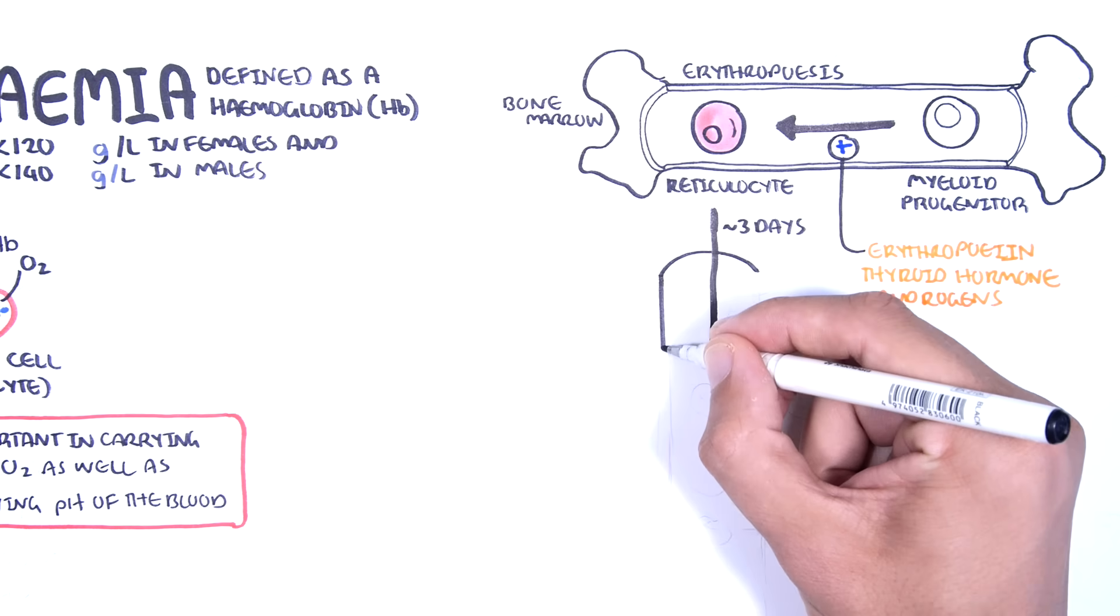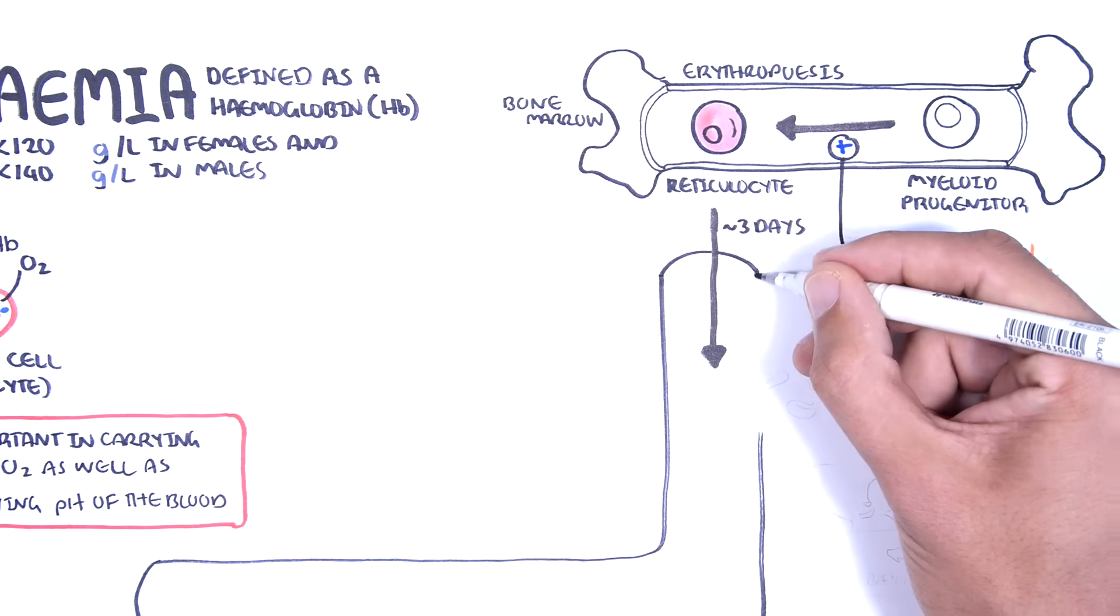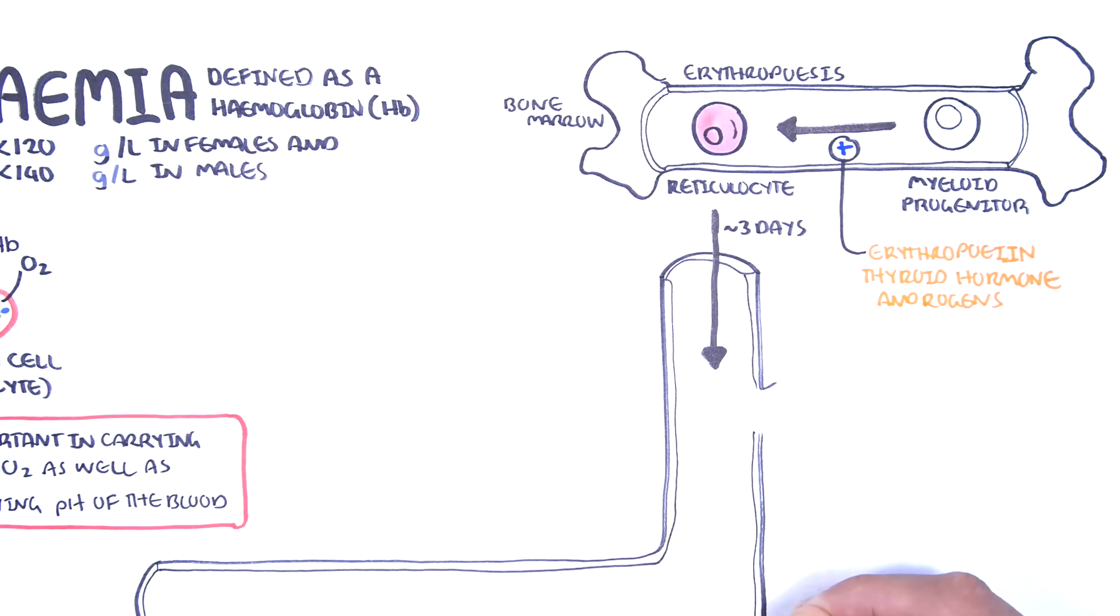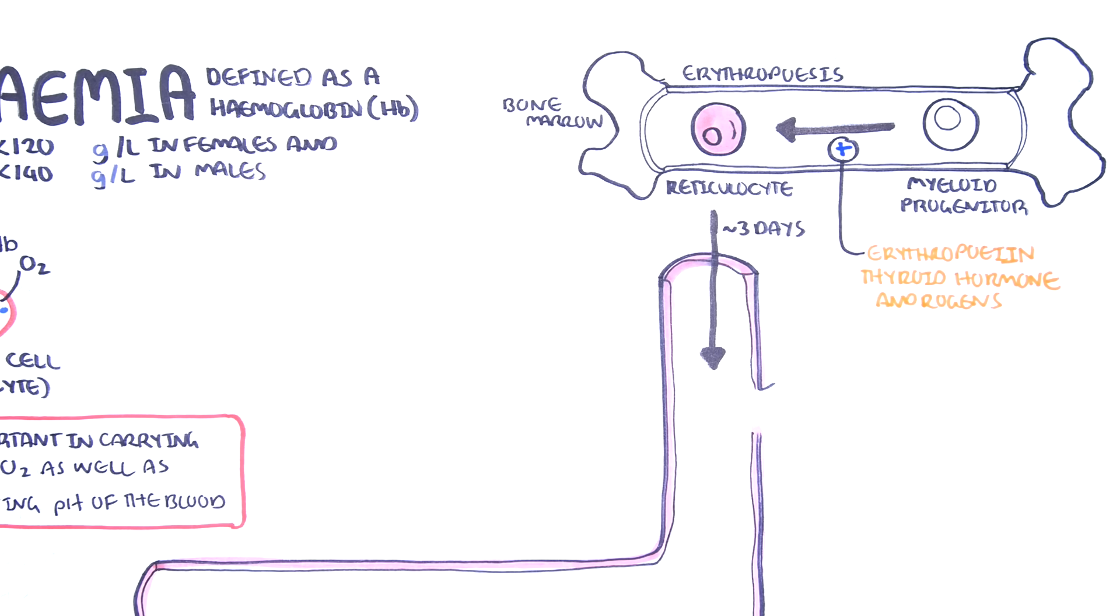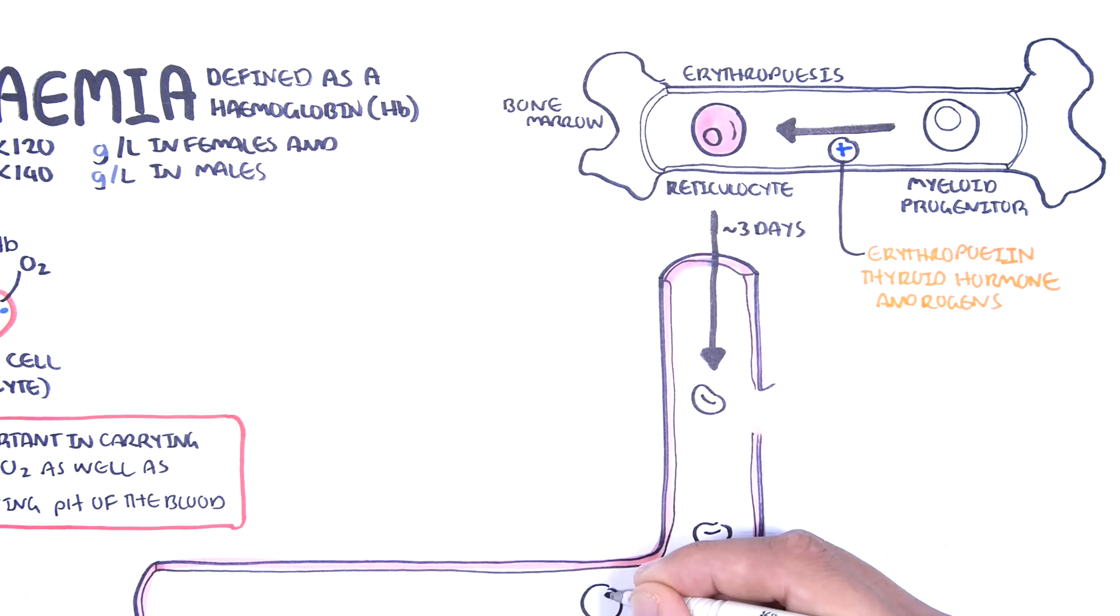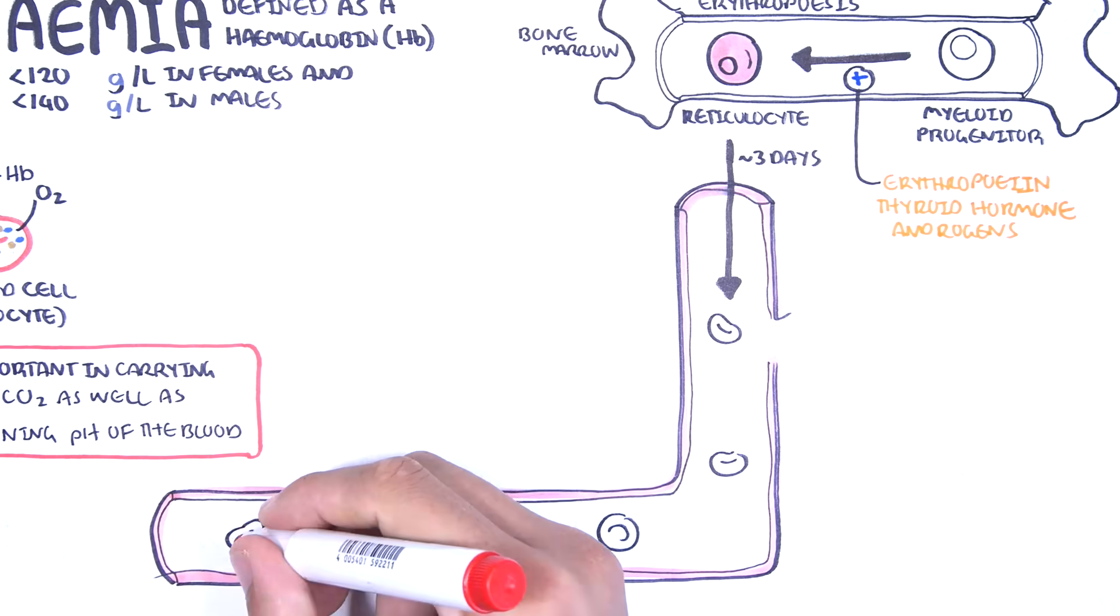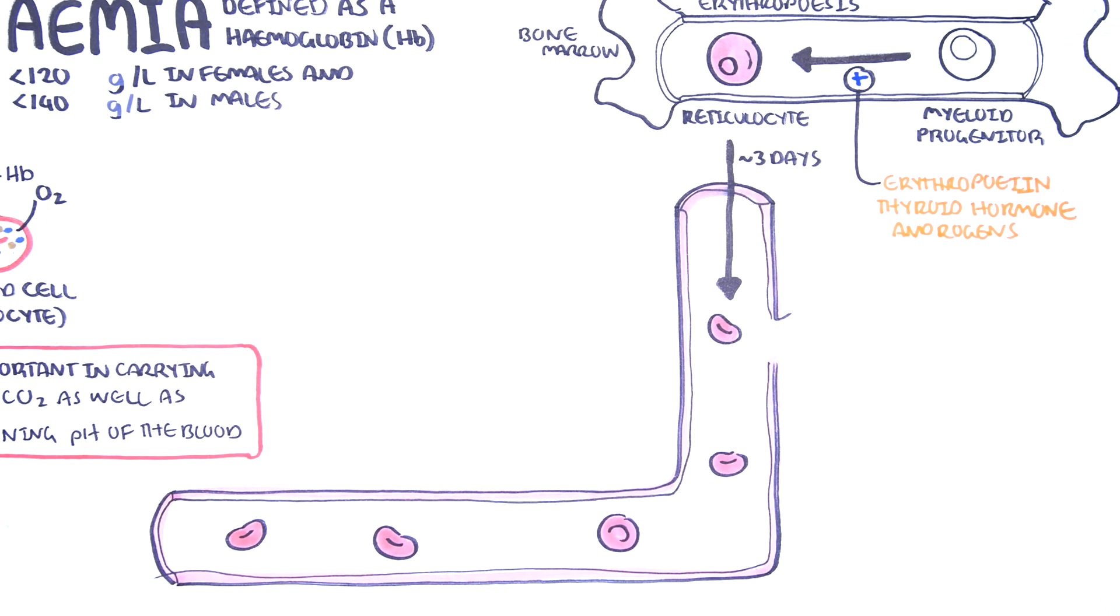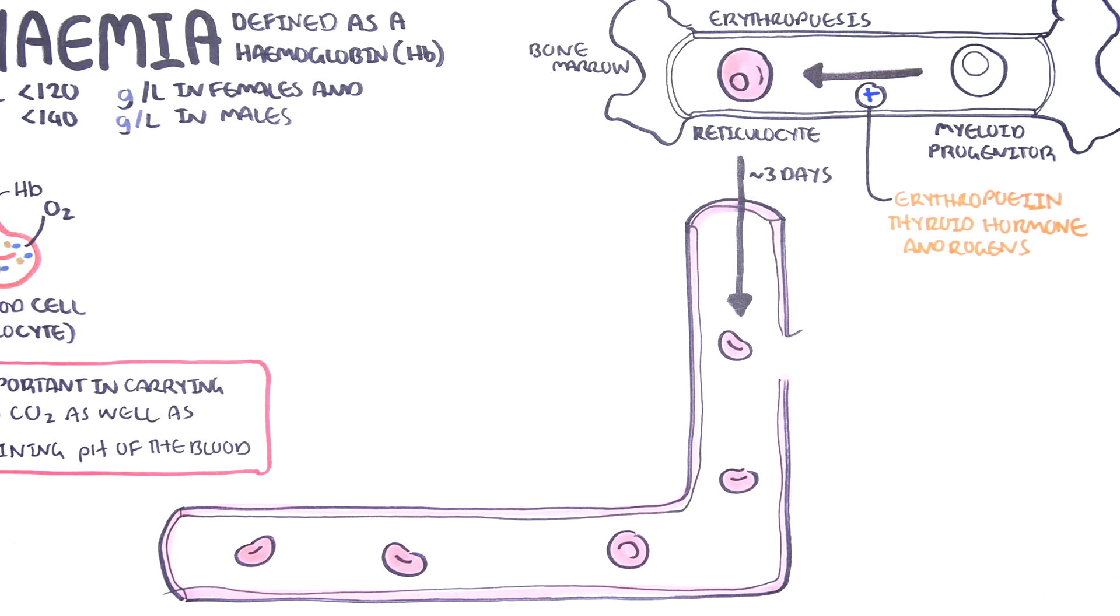Reticulocytes are the premature erythrocytes, so the premature red blood cells, a cell still capable of limited amounts of hemoglobin and protein synthesis. The reticulocytes enter the bloodstream three days later and mature to become the red blood cell as we know it.